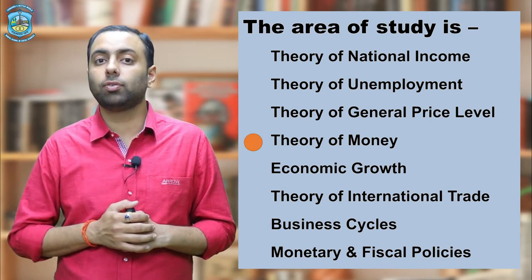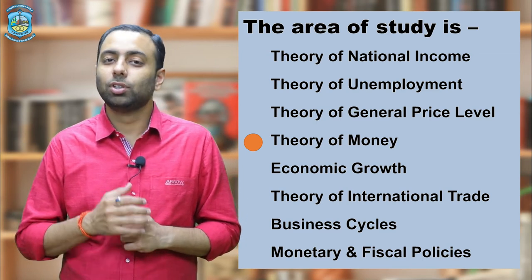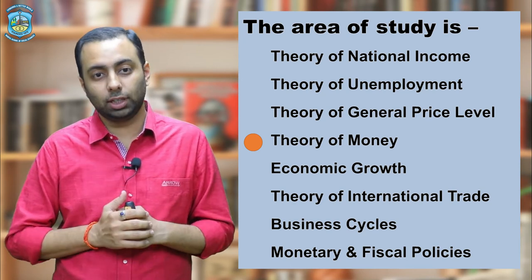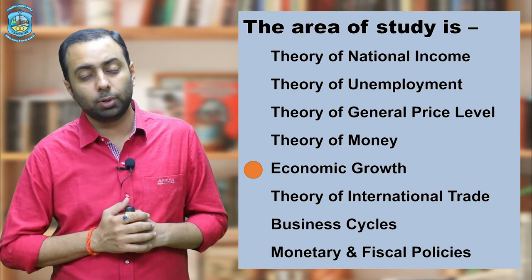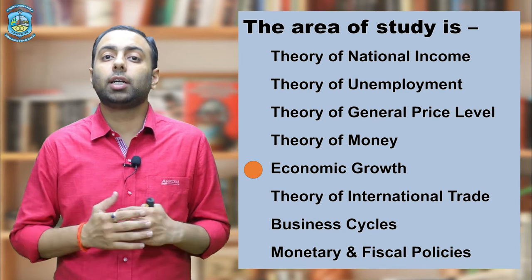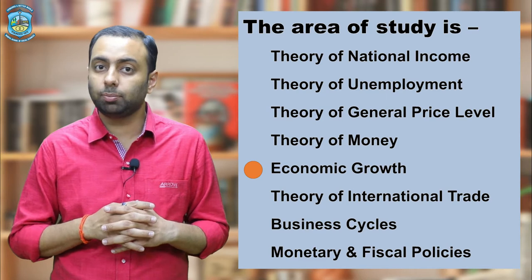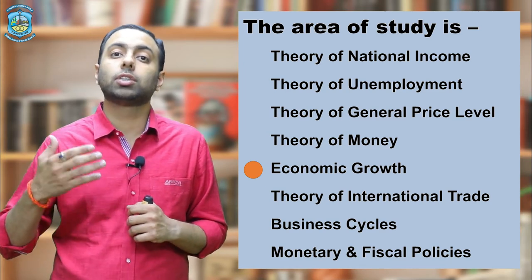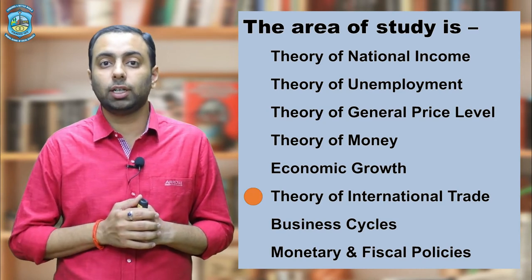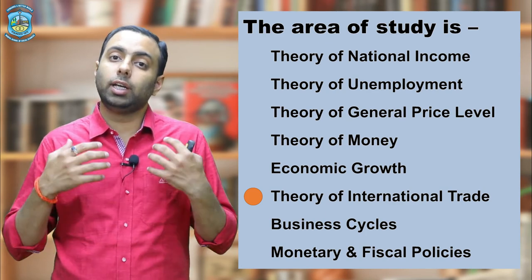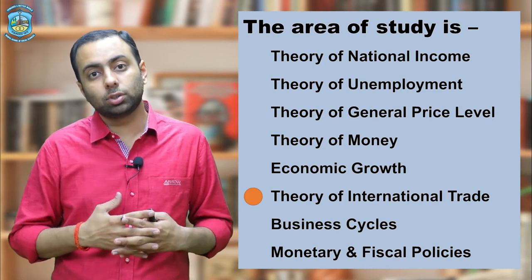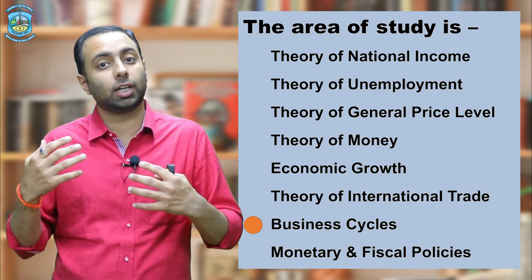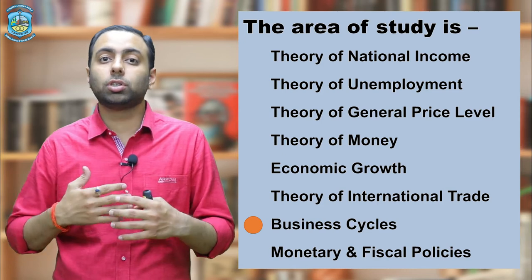Macroeconomics also covers the theory of money — recalling the terms M1, M2, M3, M4 — broad money, narrow money, and how money circulates in the economy. The theory of growth deals with economic welfare and economic growth — how to make the country more wealthy and achieve sustainable development and sustainable economic growth for the welfare state. Then we have the theory of international trade — exports and imports, and how to enrich the country with available resources. Finally, we have the business cycle or trade cycle, involving boom, recession, depression, and recovery phases, and monetary and fiscal theories.